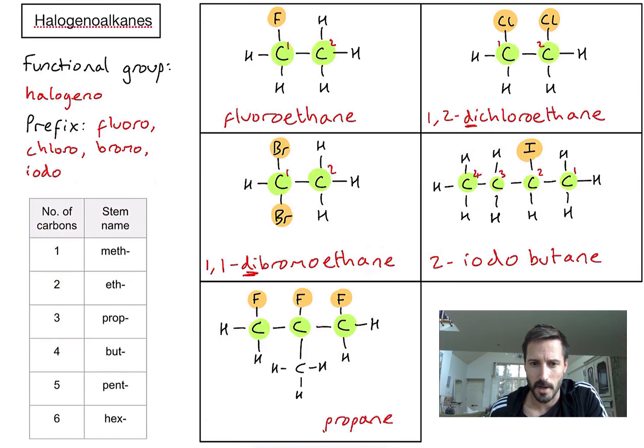First, let's deal with the fluorines. If I number my carbons, it doesn't matter which direction - left to right or right to left. They're on carbons one, two, and three. There are three fluorines, so I need to put 1,2,3-trifluoro.